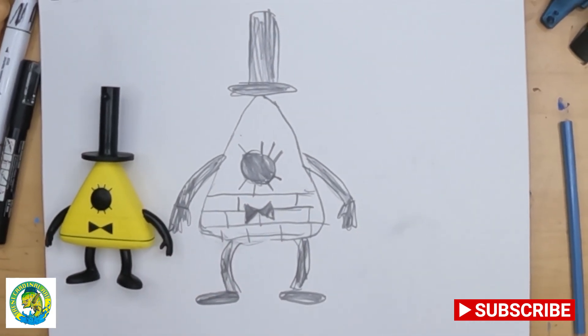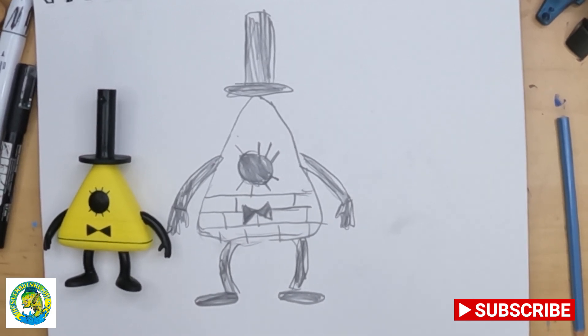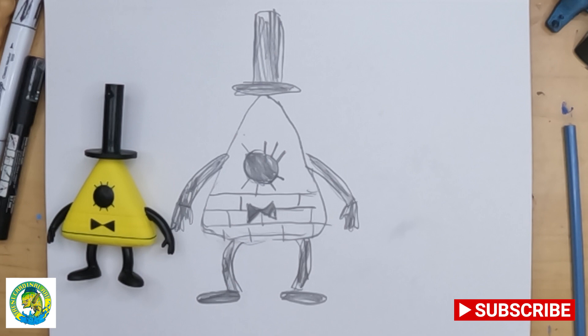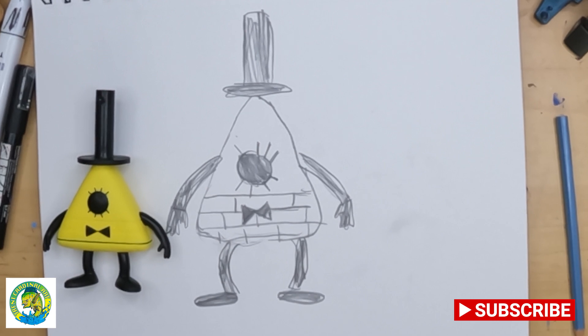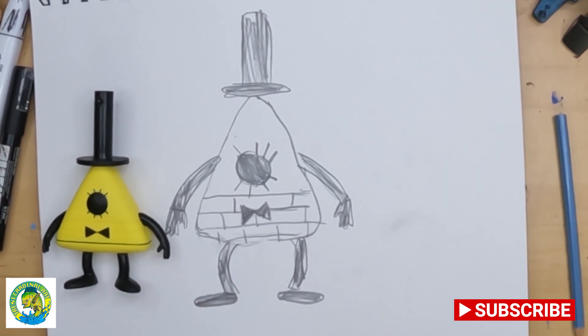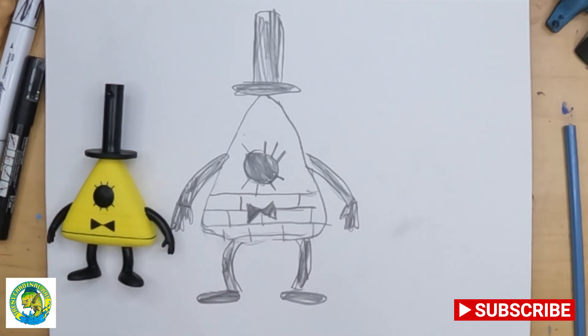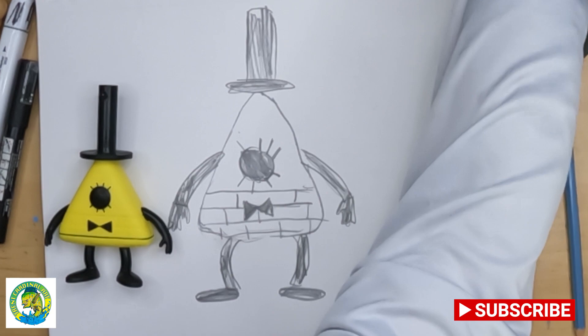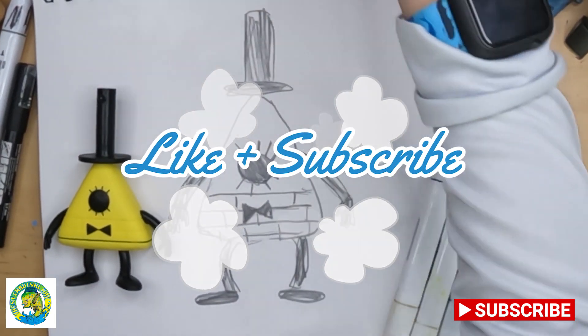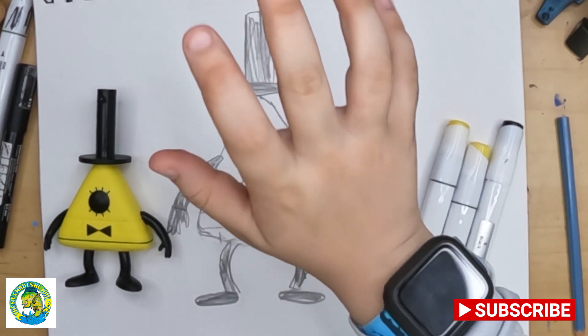I'm going to end up fast forwarding through all this coloring. But I will show you the colors that you would need. A yellow, or two yellows if you want. You don't have to. And a black. That's all. No other colors. I know. It's pretty plain and simple. So don't forget to like and subscribe. And I'll see you guys when I'm done.